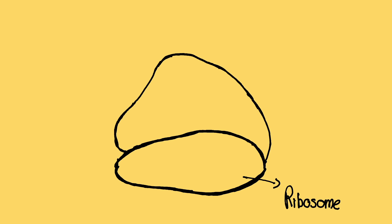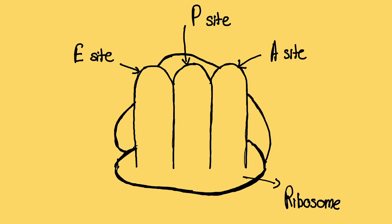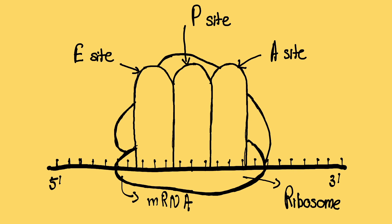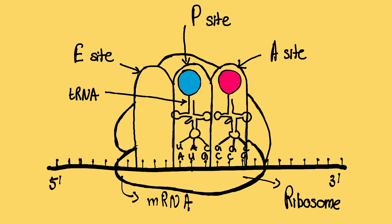So you'd start with a ribosome. It has three sites: the E site, P site, and A site. The mRNA to be translated would attach itself to the ribosome. The attached mRNA would get read and tRNAs would bring appropriate amino acids to the ribosome to the appropriate site.